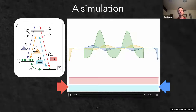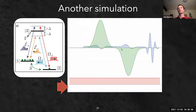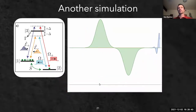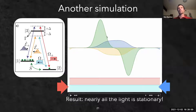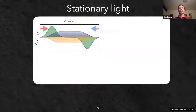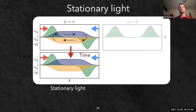When the coherence is in phase at each end of the ensemble, turning on the control field causes the spin wave to decay and emit light leaving in two different directions, with some light left behind in the memory. When the atomic coherence is pi out of phase at each end, negligible light leaves the memory - instead, light is trapped inside, with probe fields emitted by one end of the spin wave, absorbed at the other end, and sent back the other way: the light circulates.